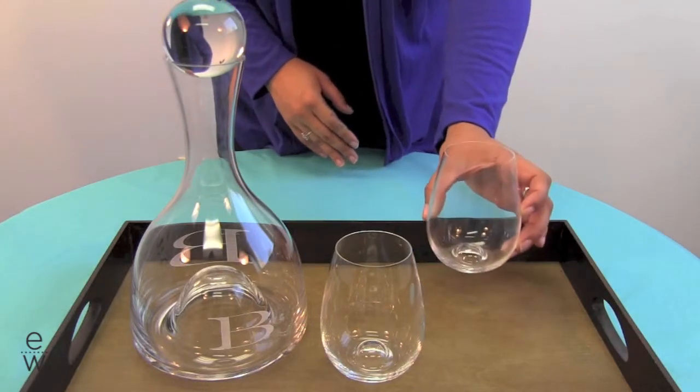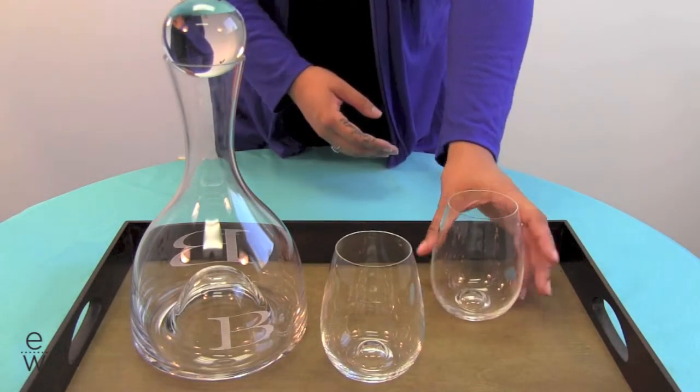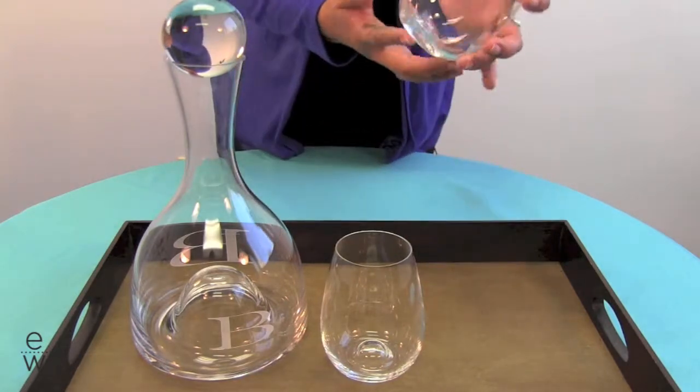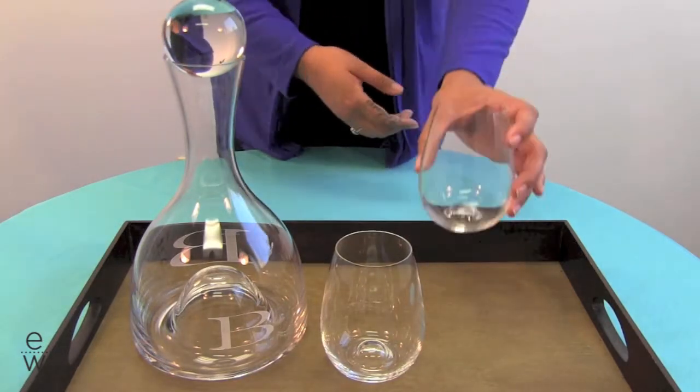Two 16 ounce stemless wine glasses and you'll notice all three pieces have a bubble in the bottom which helps decant the wine.